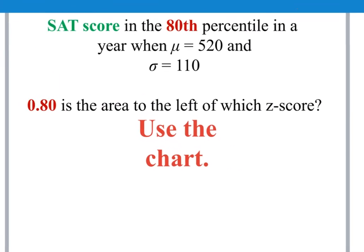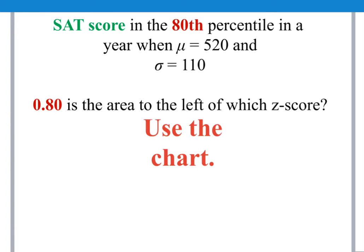For example, let's say you know that someone scored in the 80th percentile on the SAT in a year when the mean was 520 and the standard deviation was 110, and those values do change every year. So you're talking about a score in the 80th percentile, and the area under the normal curve can also represent a percentile. So what we need to do is to convert that 80th percentile to a decimal first. And it's the area to the left of which z-score? Well, we have to use the chart. We're going to use the chart in reverse.